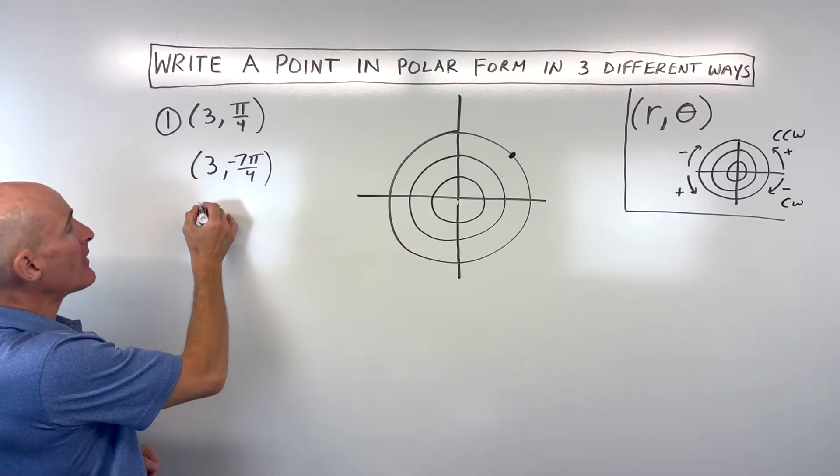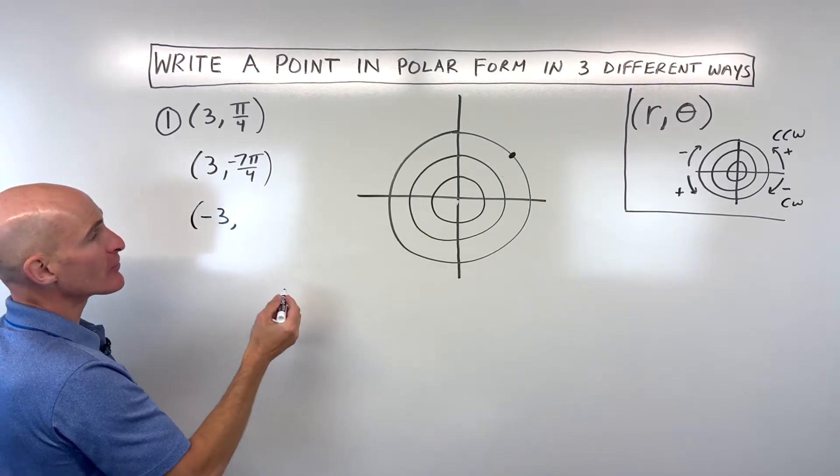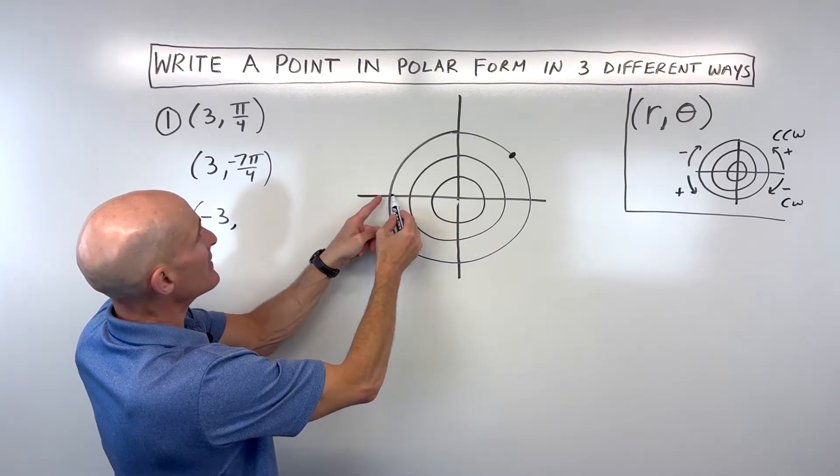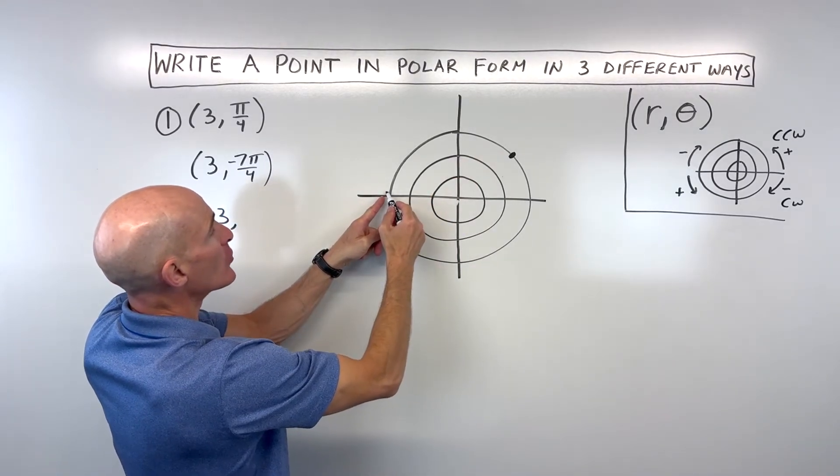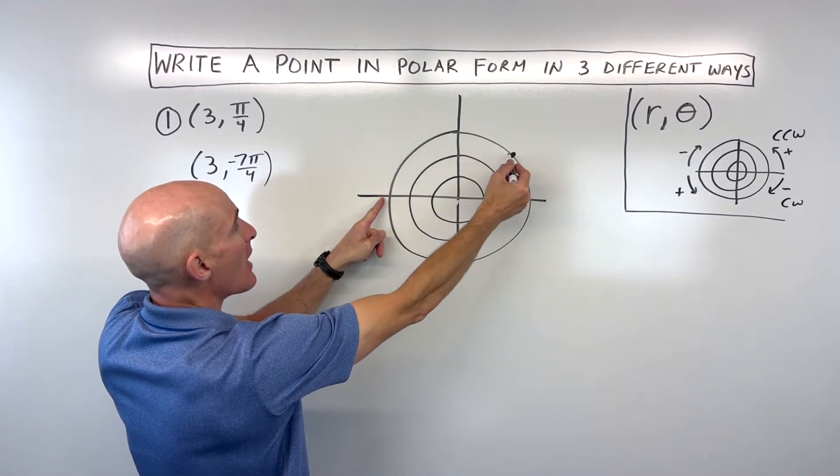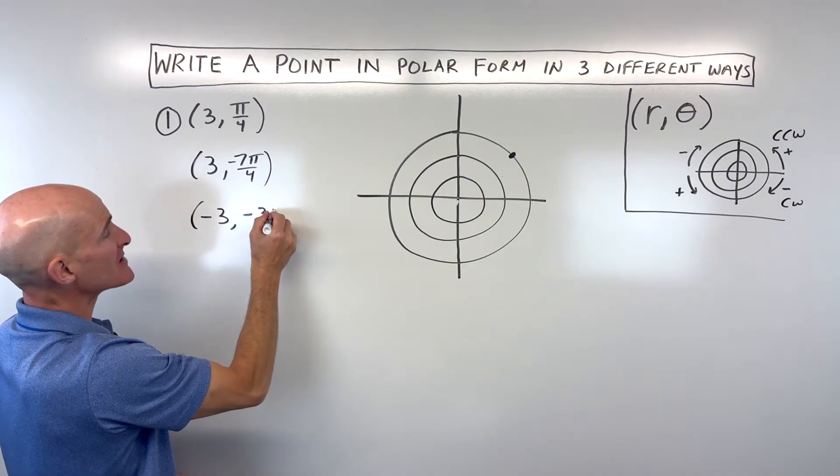Now let's make the r value negative. So negative three. You can go left three like this and then say, how do I get to this point? I could rotate clockwise three pi over four. Remember when you go clockwise, that's a negative angle.